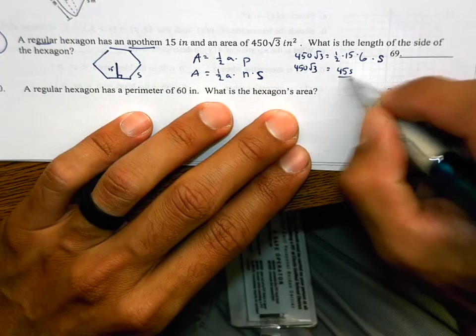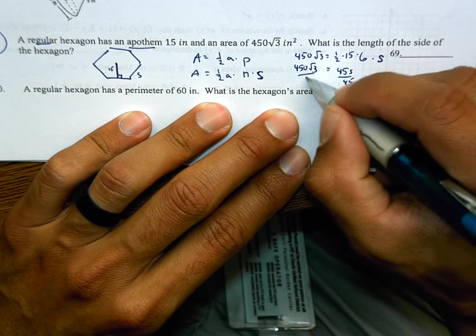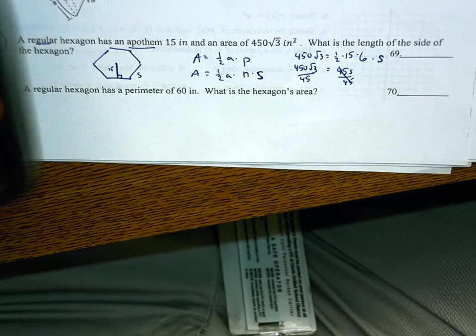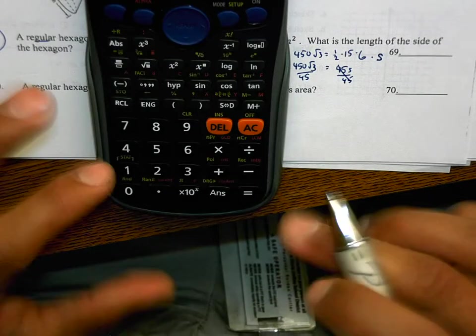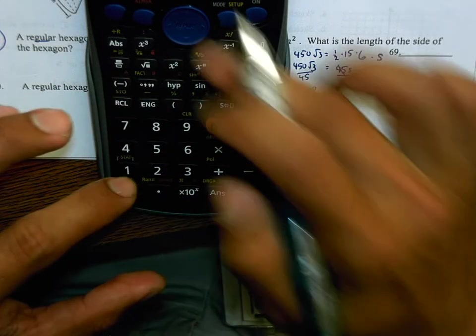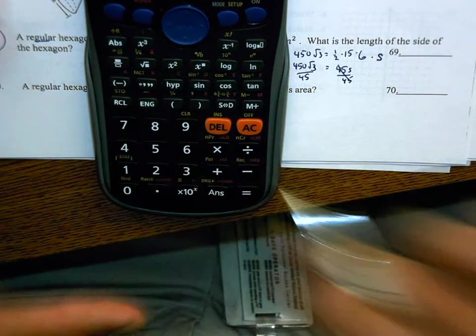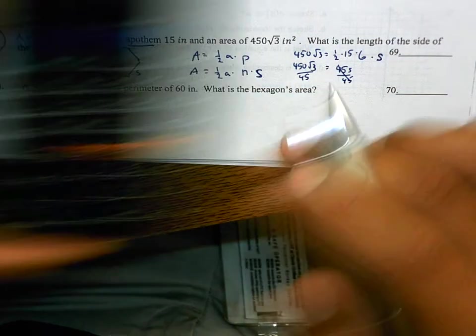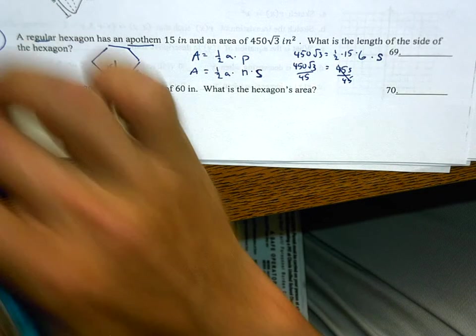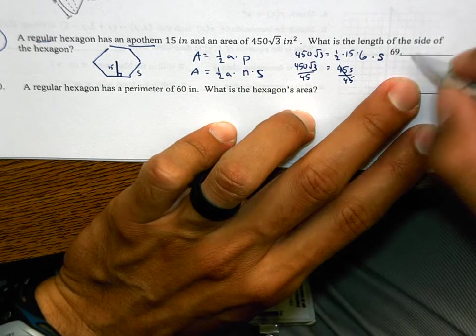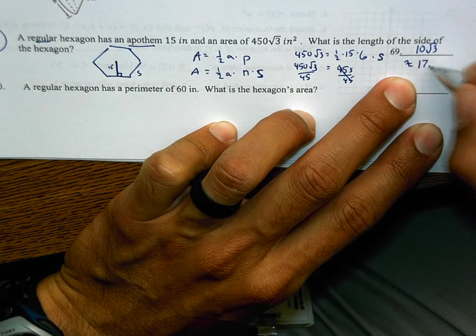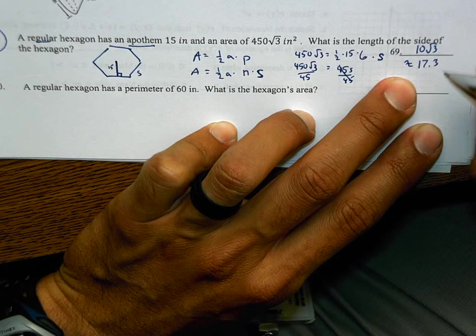I'm going to divide by 45 so I can know what that side length is. I probably could do that in my head. I think it's going to be 10√3. And it is. The side length is 10√3, otherwise known as 17.3.